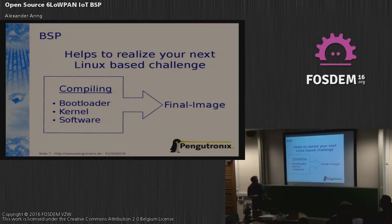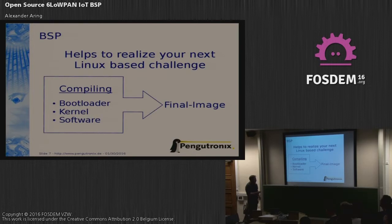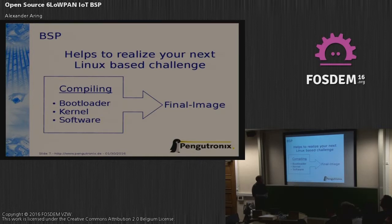Simply check out the Git repository for the WPan Kit, then type some shell commands, and at the end a final image will be produced. You can flash it on your SD card. It runs everything — the bootloader and the kernel with special 6LoWPAN enabled features, and the userspace software which is needed for 6LoWPAN and IPv6 stuff.